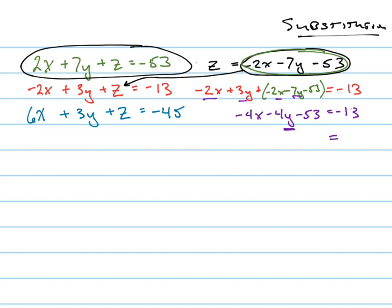Adding fifty-three to negative thirteen gives you forty. And adding four x to both sides is going to give me four x. Then I also have to divide by negative four. So y equals negative x minus ten.